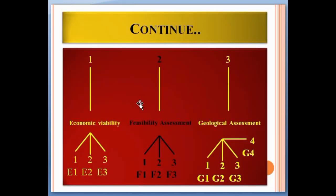From this graph you can understand what economic viability assessment, feasibility, and geologic assessment are. The economic viability axis has code 1, feasibility assessment axis has code 2, and geologic assessment axis has code 3. Economic viability axis has codes E1, E2, and E3; feasibility assessment has codes F1, F2, and F3; and geologic assessment axis has codes G1, G2, G3, and G4.